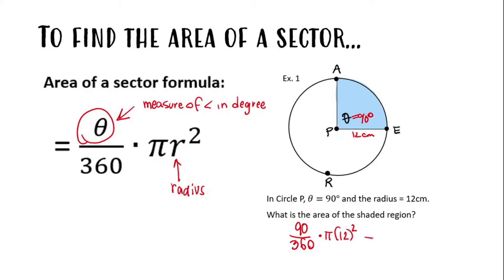When we type all this stuff into our calculator, let's round our answer to one decimal place. The answer is 113.1 square centimeters. That is the area of the shaded region.